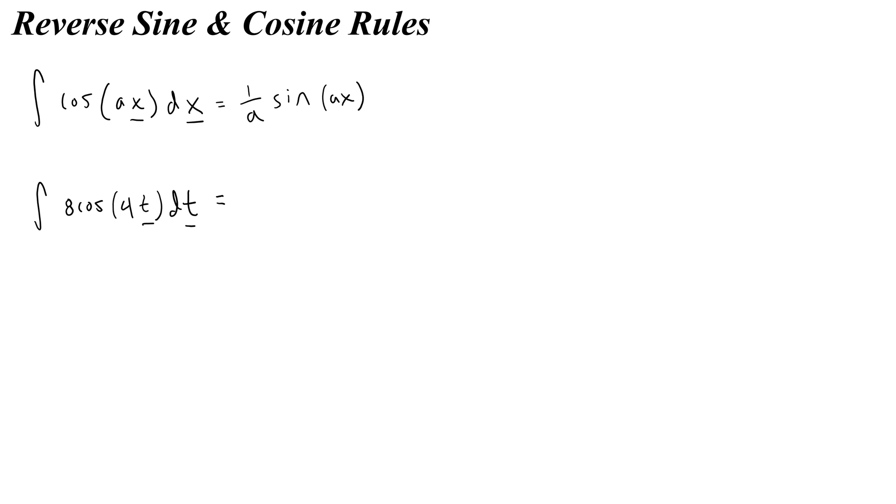And then I would think, well, I can take this 8 because it's constant, and I can pull it outside of my integral and think 8 times whatever cosine 4t is. So 8 times 1 over 4, because 4 is like my a, sine of 4t. Or 8 times 1 fourth is just 2. So 2 sine 4t, and then I would need to write plus c if this was an indefinite integral.